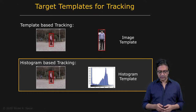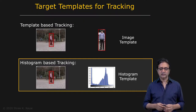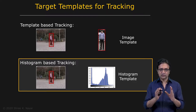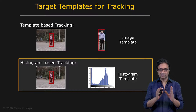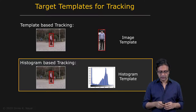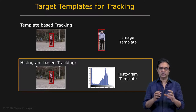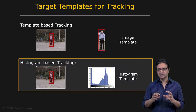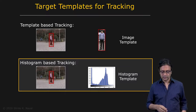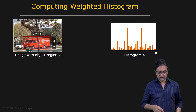The second method is histogram-based tracking. Instead of using the image region as a whole, you compute a histogram — it could be a brightness histogram or a color histogram, a high-dimensional histogram. That histogram serves as a template, and you match histograms between images to track the object.